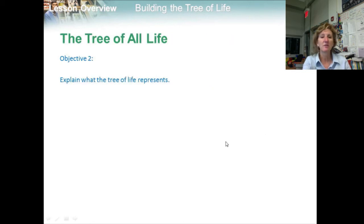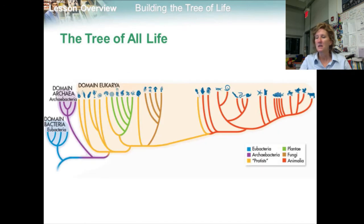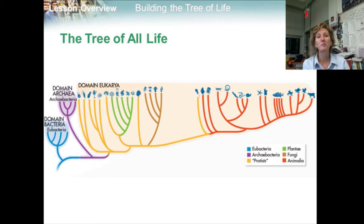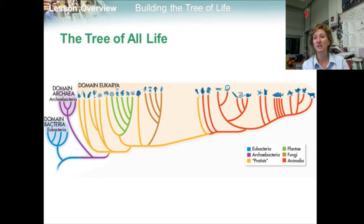Modern evolutionary classification is rapidly changing, with the difficult goal of presenting all life on a single evolutionary tree. The tree of life shows current hypotheses regarding evolutionary relationships among the taxa within the three domains: Domain Eukarya, Archaea, and Bacteria.